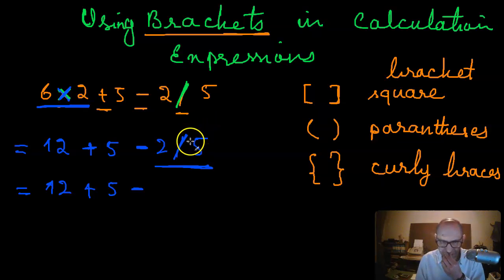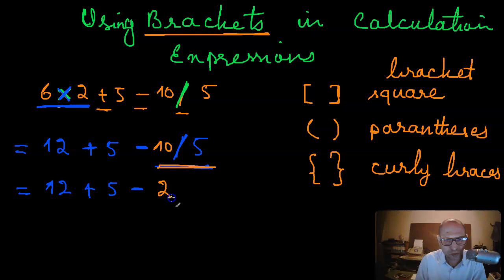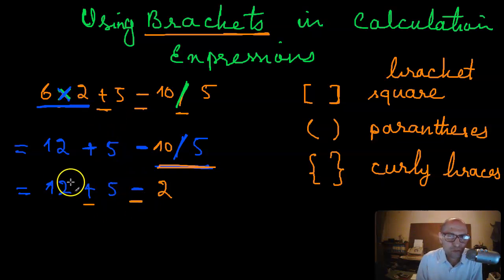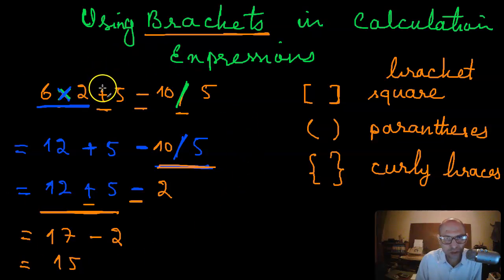Continuing the example with 12+5−2: addition and subtraction have equal priority, so we go left to right. First, 12+5=17, then 17−2=15. That is the final answer. This is the exact manner in which the expression must be evaluated following the rules of order of operations.